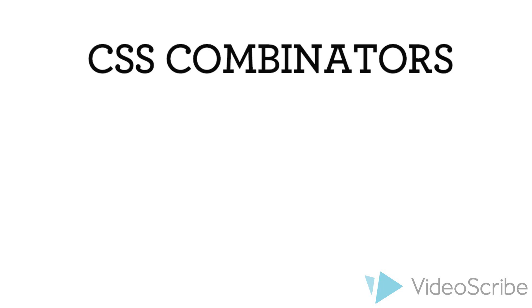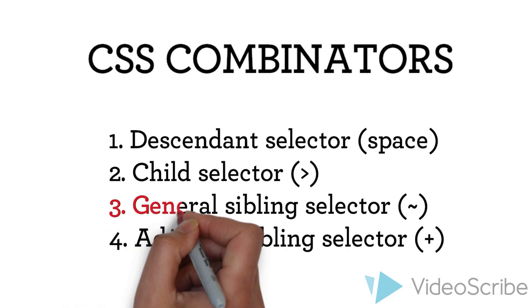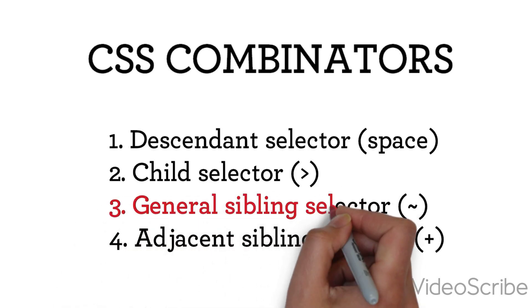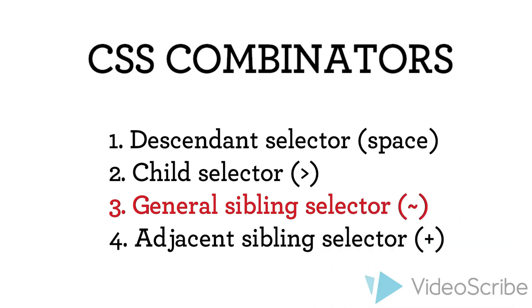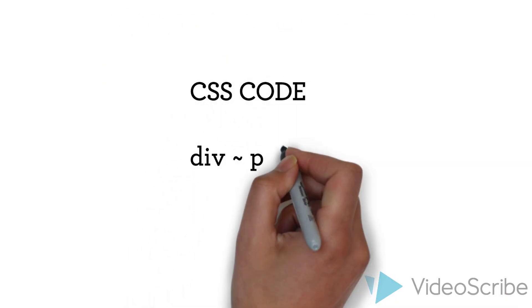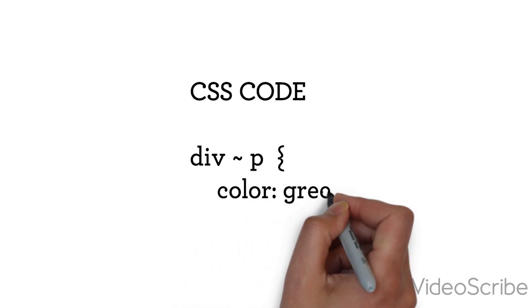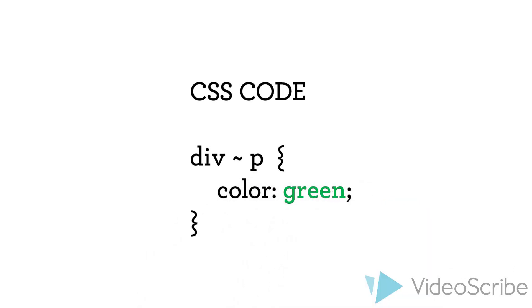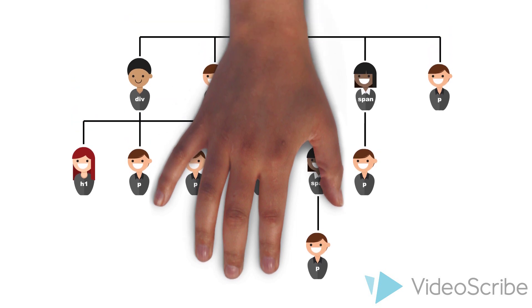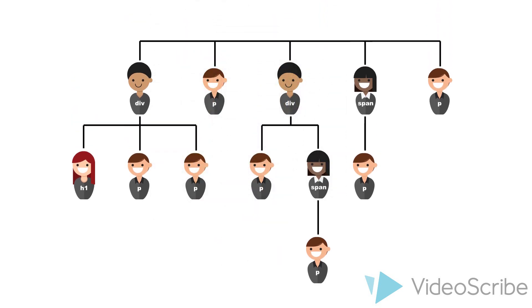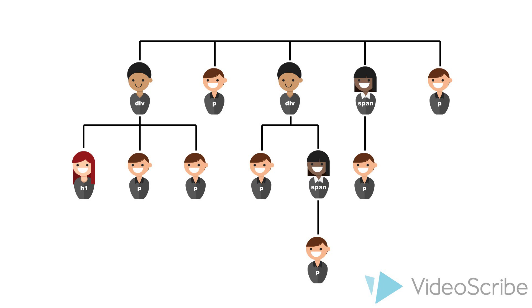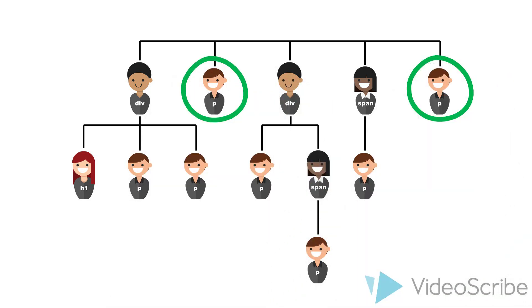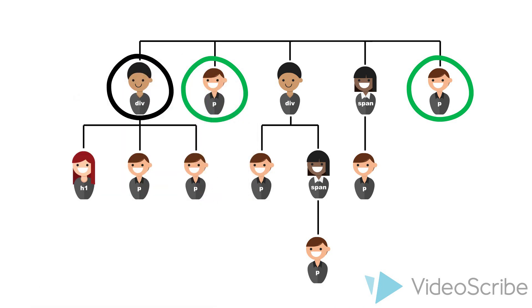The third combinator we want to teach you today is the general sibling selector, which is represented by a tilde. So as an example, we use div tilde p and want to set the color to green. This selector works on all persons on the same level, which makes them siblings in a family tree. So all persons called p, which are siblings to a person called div, get the color attribute green assigned.